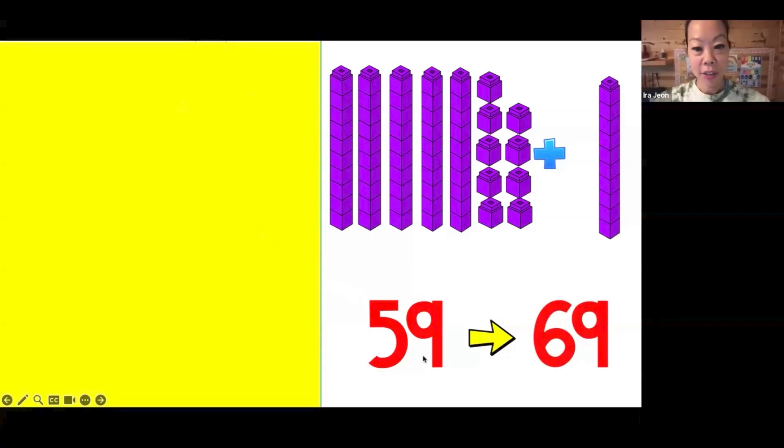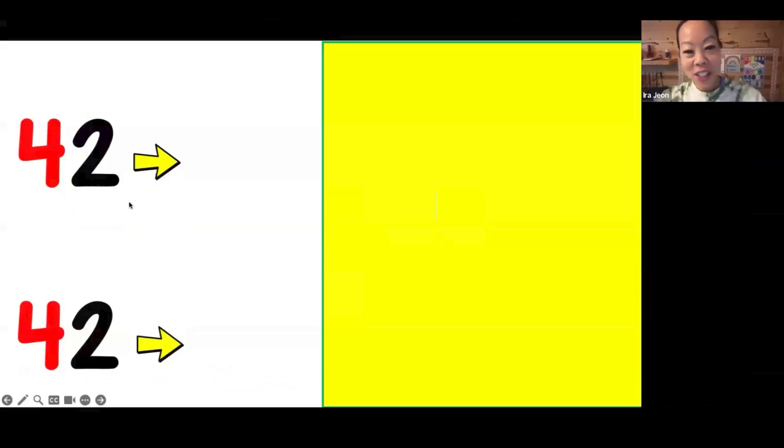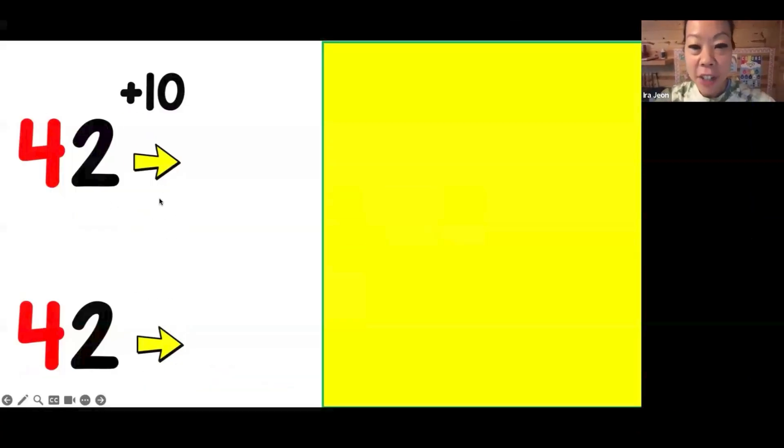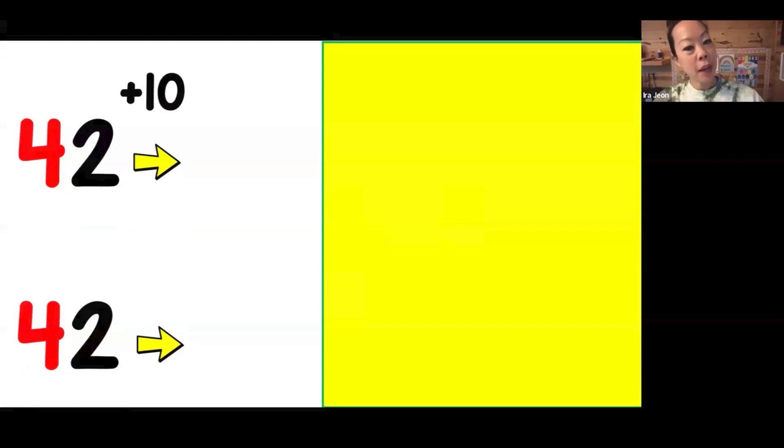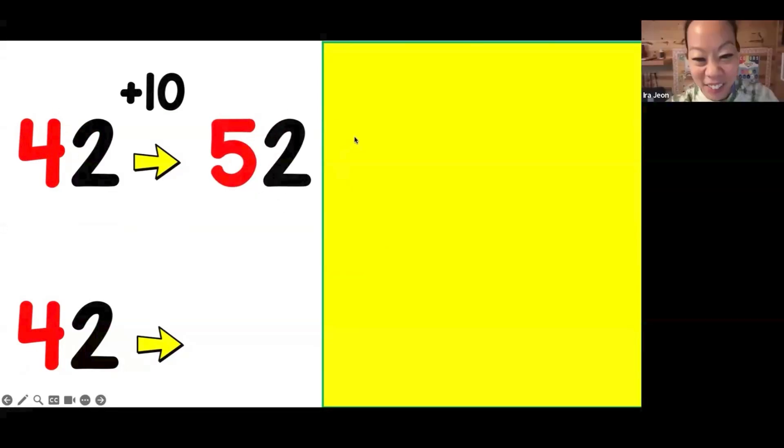Now let's move on to a different way we can do it without the place value blocks. I have 42. If I have 10 more, what would be my new number? Now you don't have place value blocks to count, but remember, just look at the 10 spot. That is the only number that changes. Anvika, do you know what the new number would be? 52. Nice, Anvika.